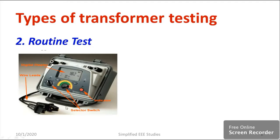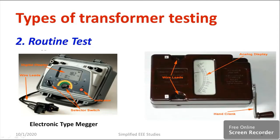As you can see, this is the electronic type, battery-powered Megger. We will be directly inserting the leads into the transformer winding and getting the reading in terms of mega ohms. This type of Megger is now commonly used. The hand-operated type Megger has an operating handle driven by a generator, with connecting leads inserted in the winding section. It gives a direct analog display, while the electronic type provides a digital display.